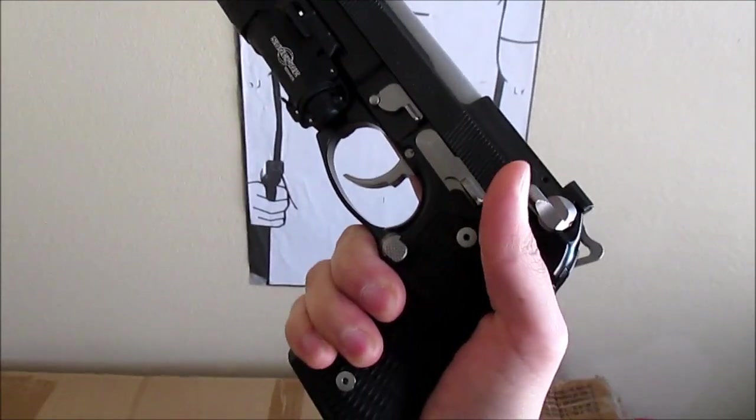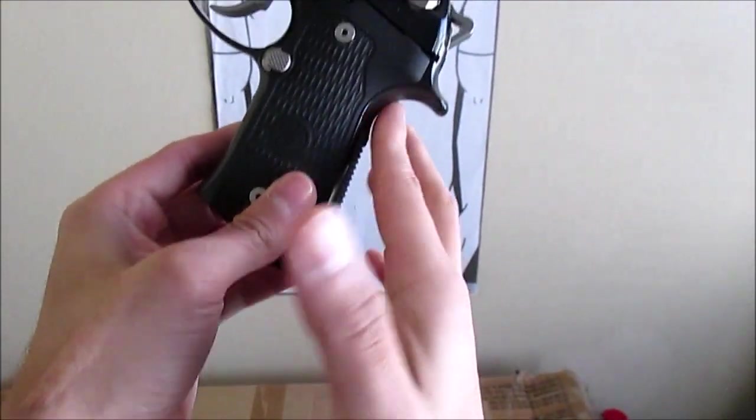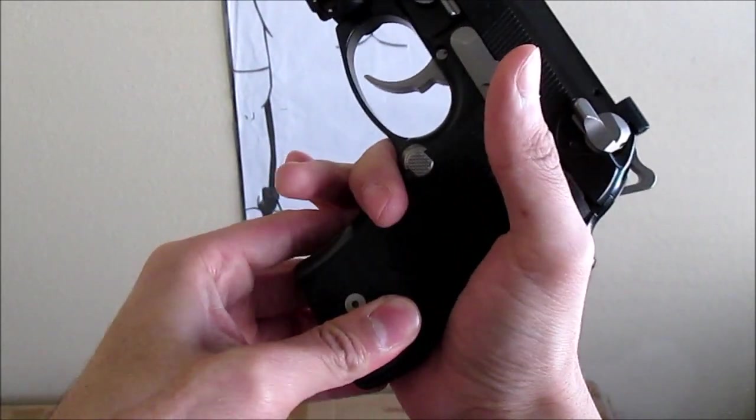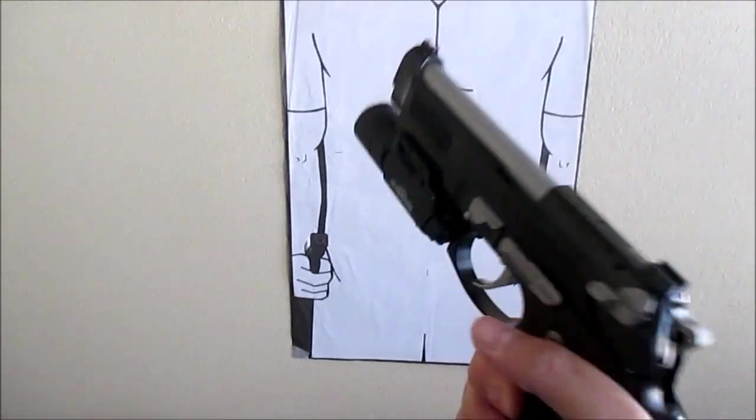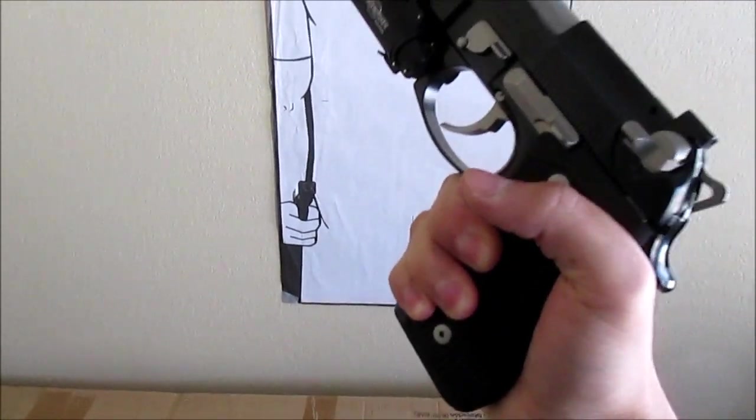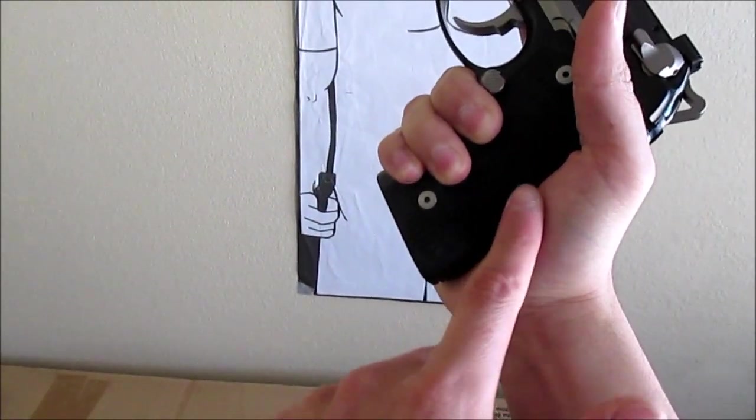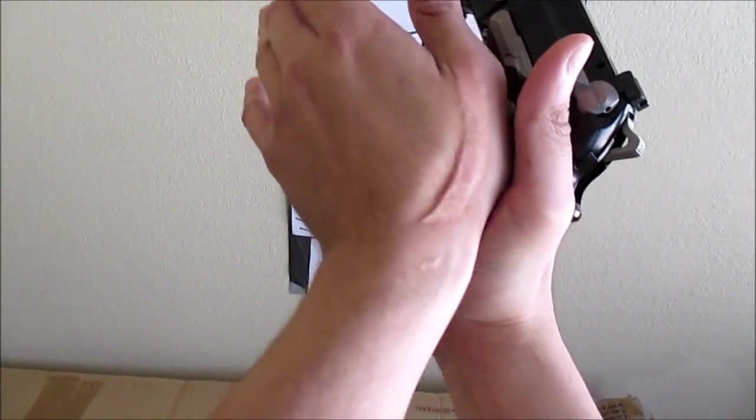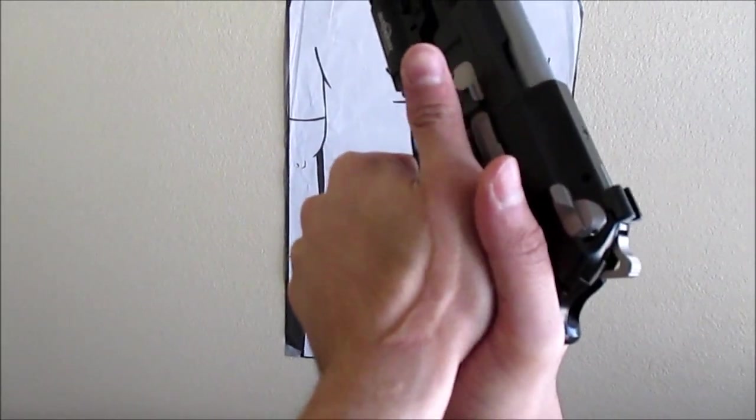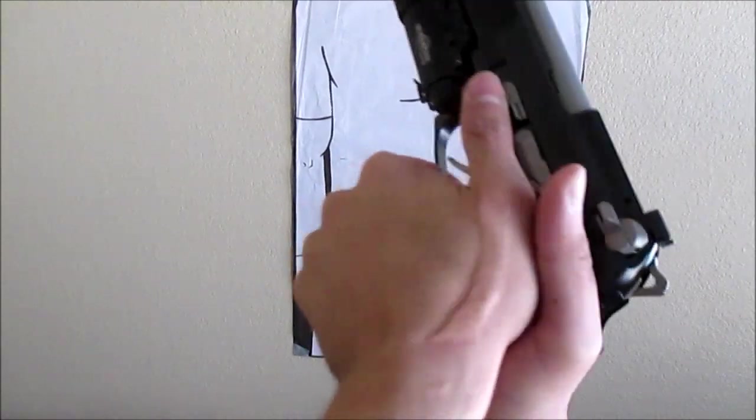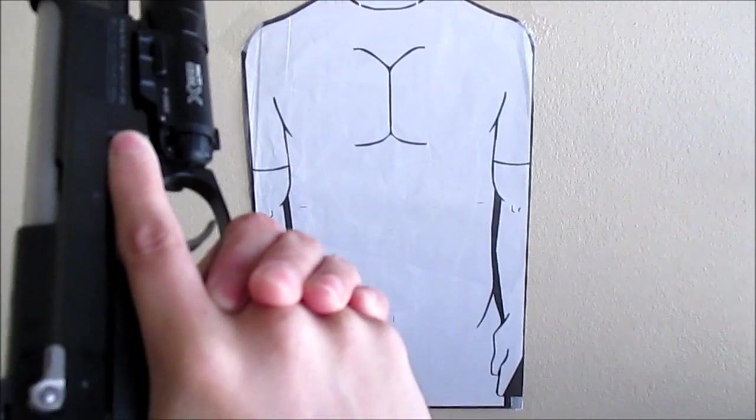So on the dry fire day, you want to spend some time learning how you'll want, how you're going to grip it. Like usual, put your hand all the way up to the beaver tail. Grip it as hard as you would a hammer. You don't want a death grip because it's going to make you shake. So just hold it firmly. And then how I like to do it is I put my support hand just like this. And my thumb will be resting on the frame. And my other fingers will wrap around just like that.